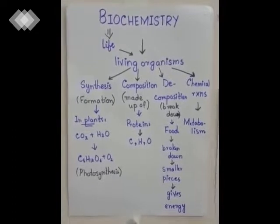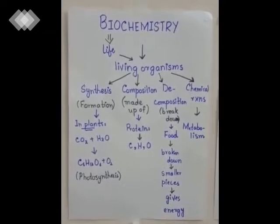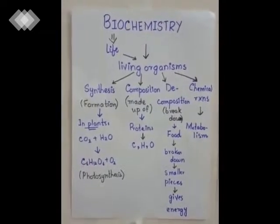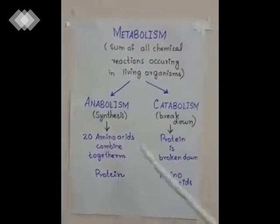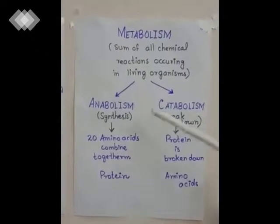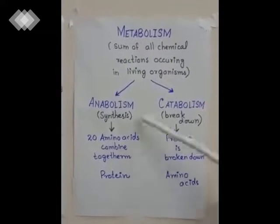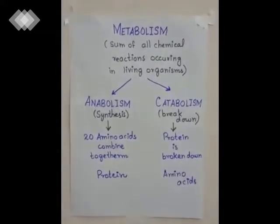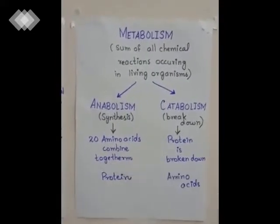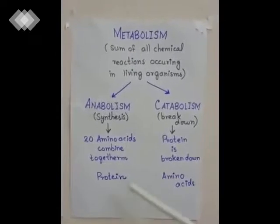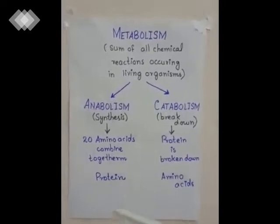The last aspect is the chemical reactions of substances taking place in living organisms. The sum of all chemical reactions occurring in living organisms is called metabolism. Metabolism is of two types: anabolism, which means synthesis of compounds, and catabolism, which means breakdown of compounds. For example, 20 different amino acids combine together to form protein — that is anabolism.